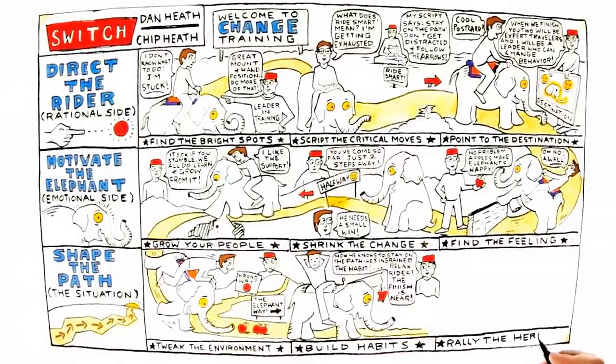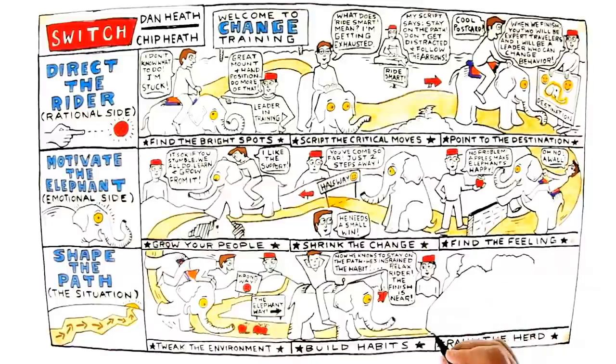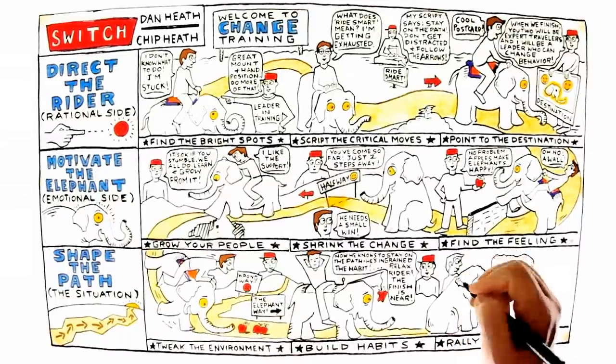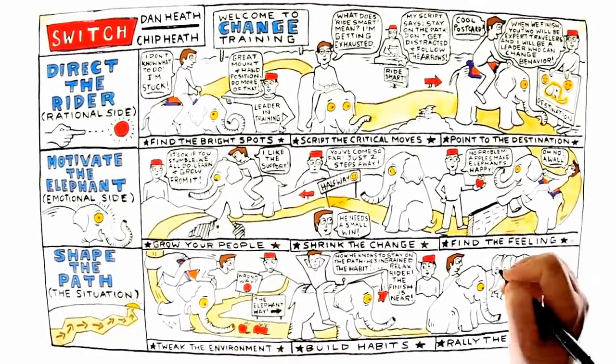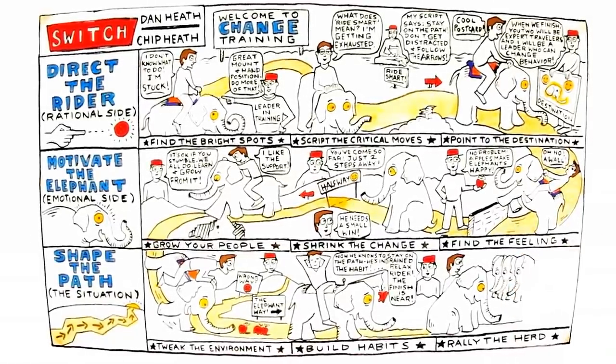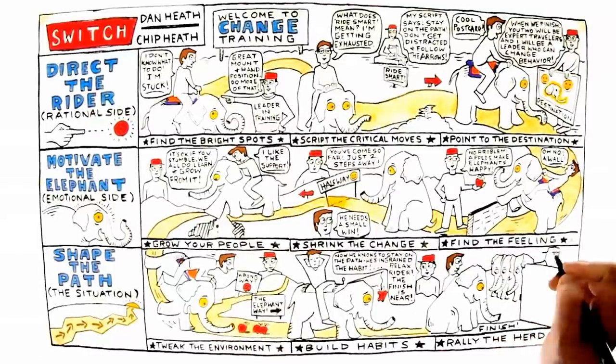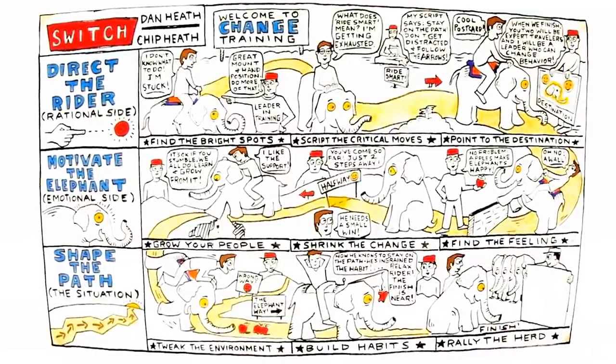Rally the herd. The elephant, the emotional side of people, always looks to the herd for cues about how to behave. In times of change, nobody knows how to behave and that can lead to problems. The Heath Brothers say that people do what they do because they see their peers doing those things.